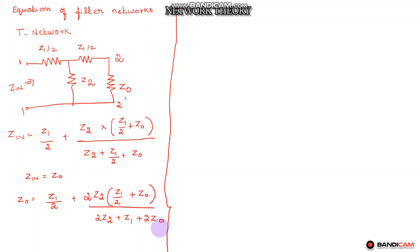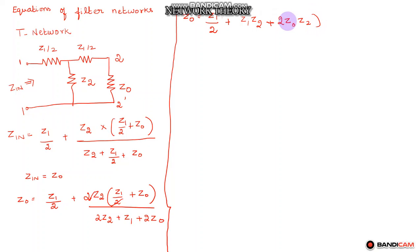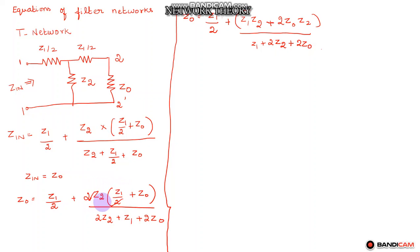We can further simplify this — you can cancel terms and write Z0 is equal to Z1/2 plus Z1·Z2 plus Z1·Z2 plus 2Z0·Z2, divided by (Z1 plus Z1 plus Z1). Here we are multiplying and then cancelling. So 2 into Z2 into Z1/2 — the 2s get cancelled — plus 2 into Z0·Z2.